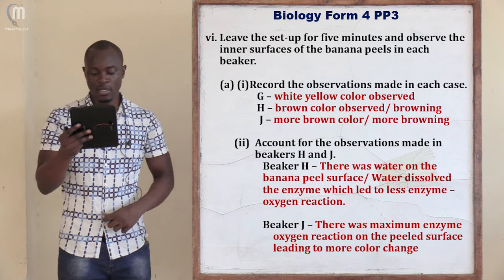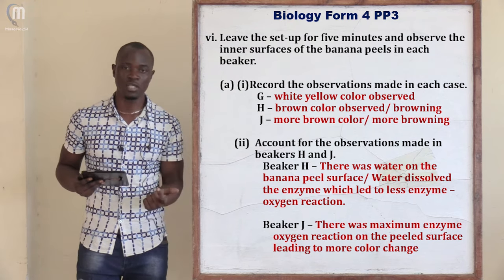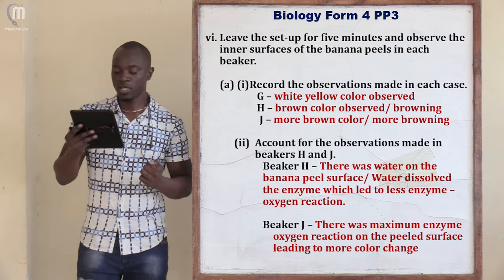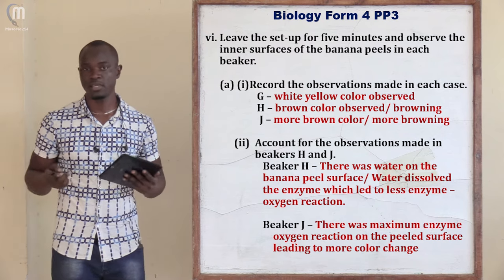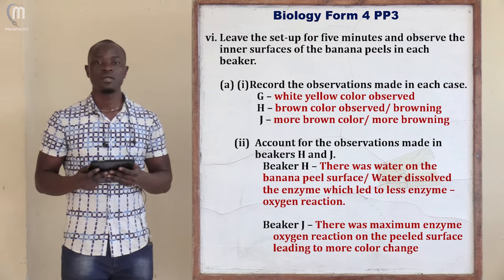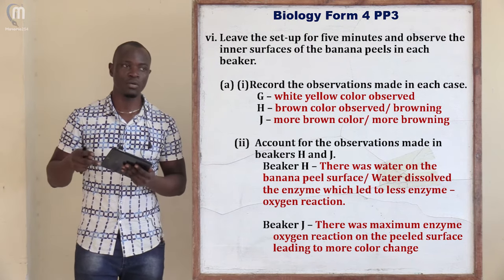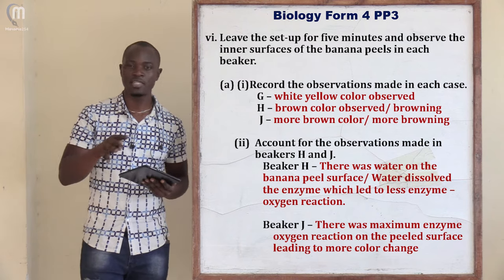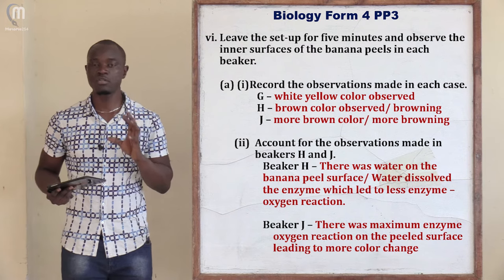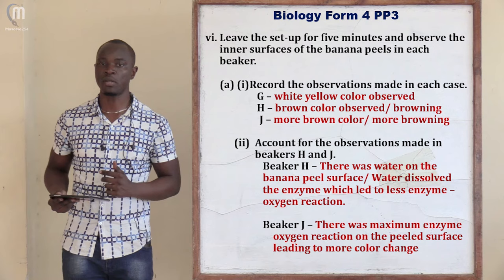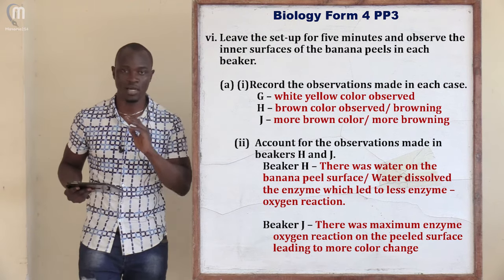Part A Roman 1 asks: record the observations made in each case. In all experiments, procedure must be followed by observations. After conducting the experiment, the observations were: for beaker G (containing hydrochloric acid), some white/yellow colour of the peels was observed. Remember — for observations, never give a reason. Don't say 'because the enzymes were being denatured.' Only state what was observed: some white/yellow colour of the peels was observed. That is it.